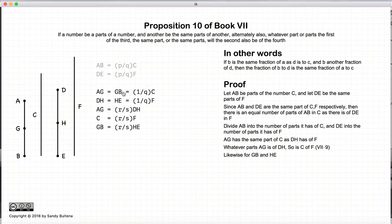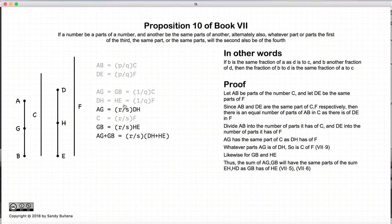Similarly, GB will also be the same fractions of HE. Now AG is some fractions or parts of DH, and GB is the same fraction of HE.